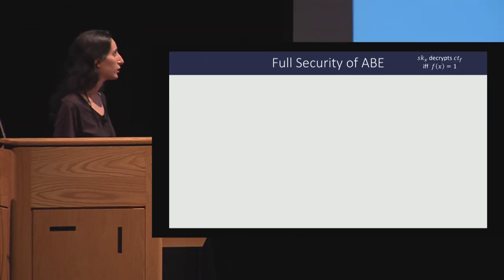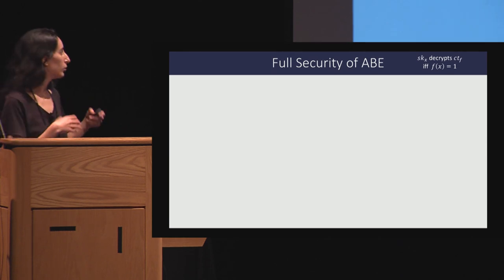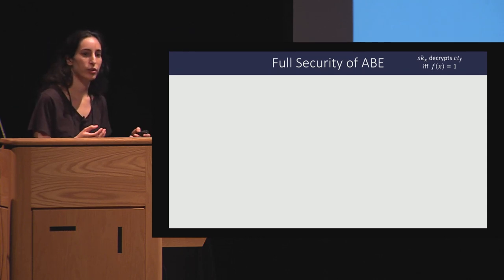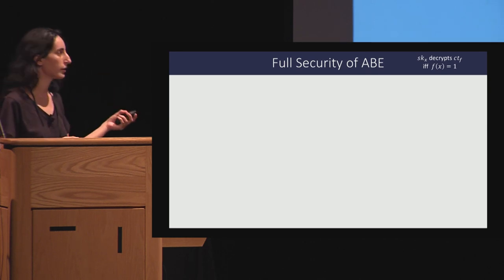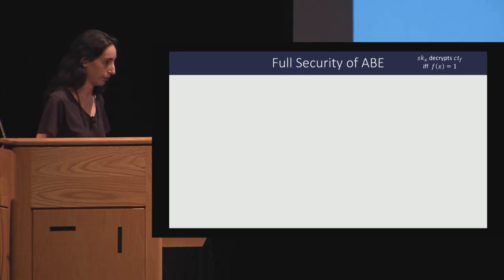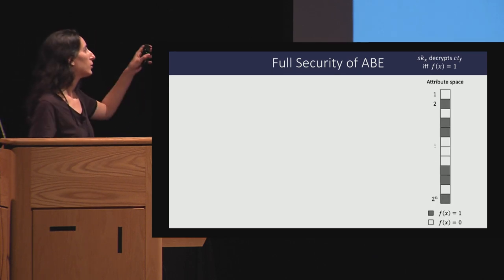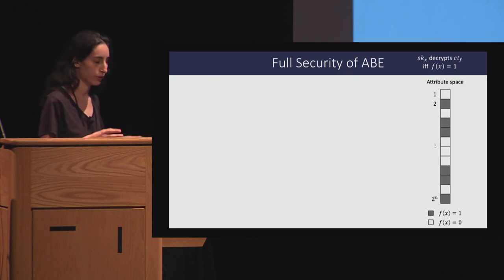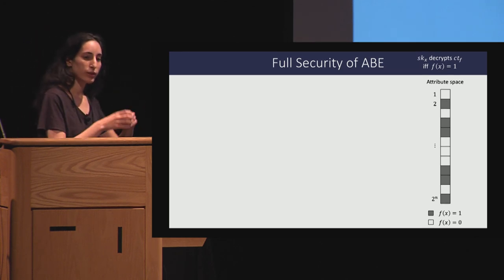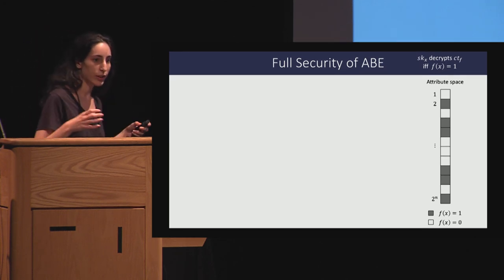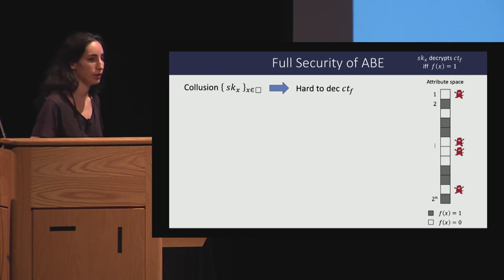Let's talk about the security notions. We want to define security capturing the decryption rule where the secret key for x can decrypt the ciphertext for f conditioned on the value of f(x). If we fix some function f, we can partition the attribute space into authorized and non-authorized attributes. We want to say that even a collusion of users cannot decrypt the message as long as none of them has an authorized key.